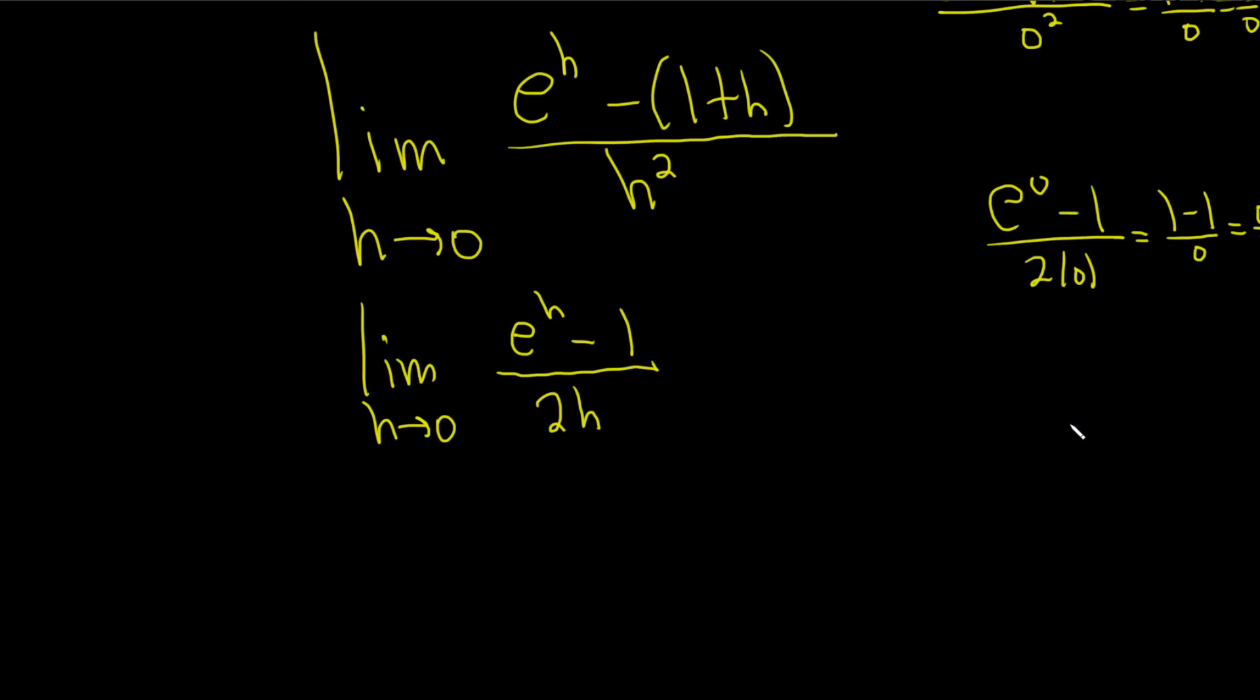Now we have to use L'Hopital's rule again. This is the limit as h approaches 0. Taking the derivative of the numerator, the derivative of e to the h is e to the h. The derivative of negative 1 is 0, it's a constant so it goes away. On the bottom, the derivative of 2h is simply 2.